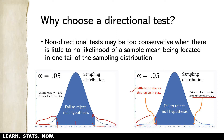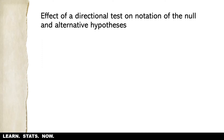That seems to be an overly conservative test for whether or not playing with puppies actually makes people happier. To address that issue and return alpha to 0.05, we would take the region that was on the left side of the distribution — which is no longer in play — and load it to the right. That becomes a one-tailed test or a directional test.